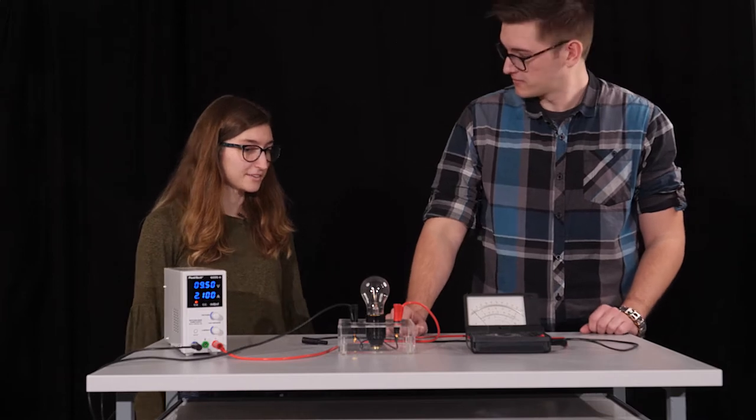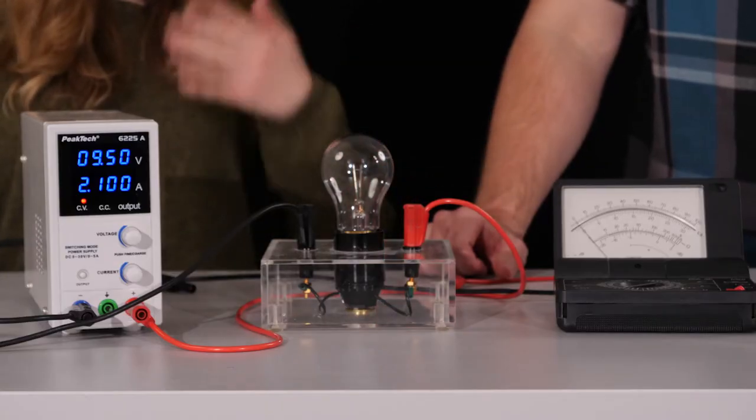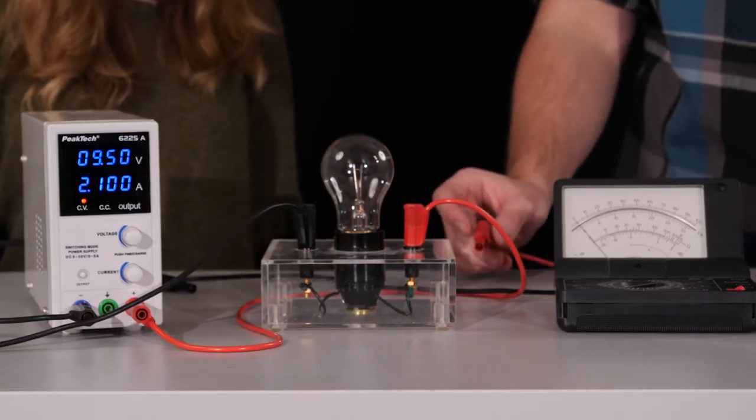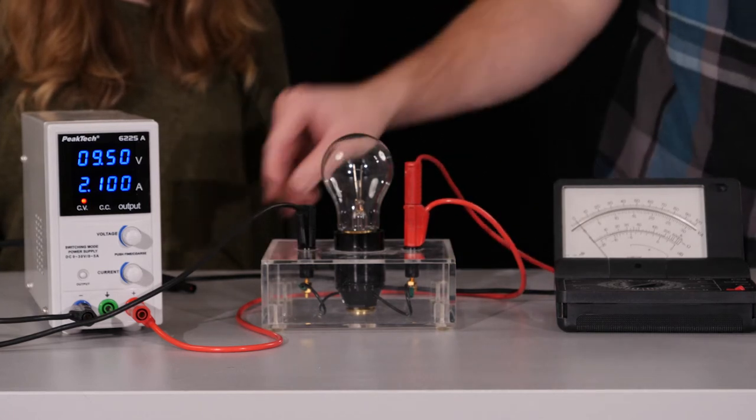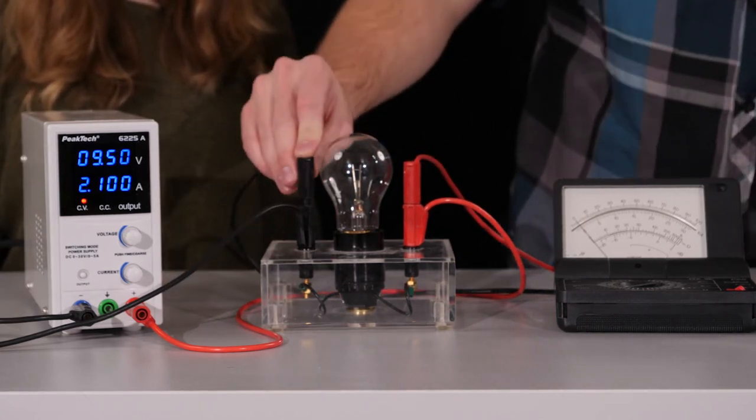Hey, so here's my circuit. Looks great. All you have left to do is hook up your multimeter. So all I need to do now is plug the positive terminal into the positive, and the negative into the negative in parallel.